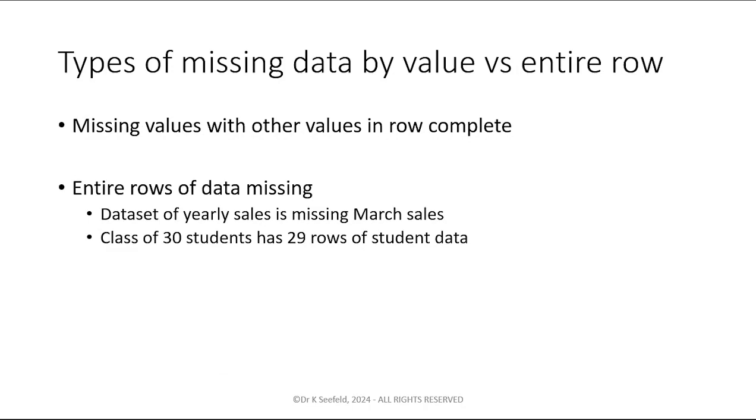You can also have missing data in two ways. You can have missing data where everything else in that row is filled in but a particular value is not filled in, like the number of pets would be blank for somebody who doesn't have a pet. But you can also have entire rows of data missing, which is another missing data issue. If you have a class of 30 students, there should be 30 rows of data, not 29. You should not have a month of sales data missing.